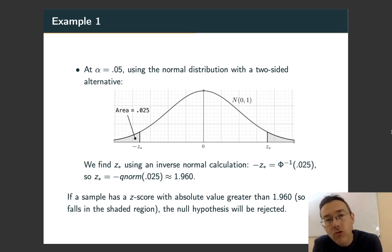We can get that critical value of z* by doing an inverse normal calculation. In R the command is qnorm and we get, as you would expect, 1.960.